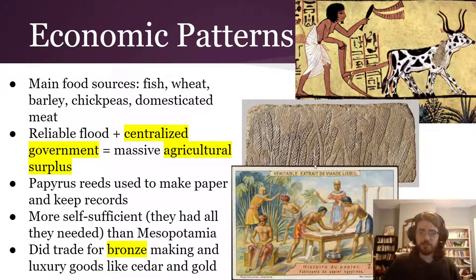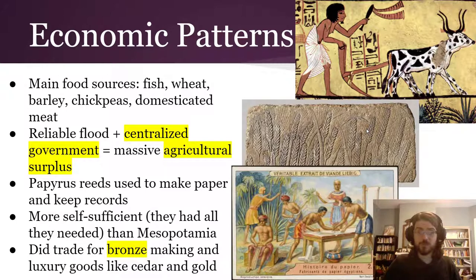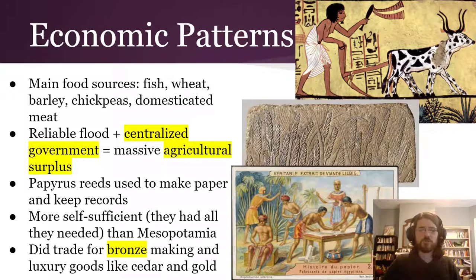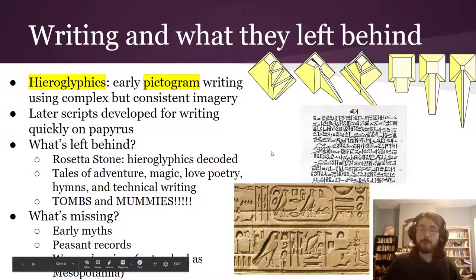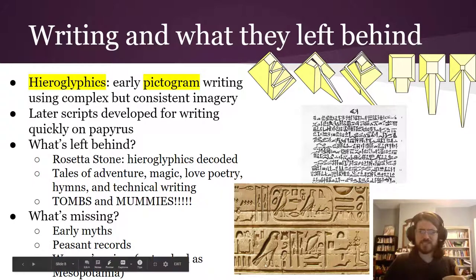They used papyrus reeds to make paper. Up here is a depiction of a plow and barley, which they also used to make beer. Down here is the process of making papyrus — here are the reeds, here's a guy making a mat out of the reeds, and then they pound it flat into something like paper. Because they had access to all these resources, they were more self-sufficient and more isolated as a kingdom. Hieroglyphics is the term for the early pictogram-style writing Egyptians used. Later, with papyrus, they developed a script that was a lot easier to write — quick lines and scribbles compared to organizing individual pictures.